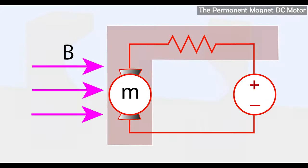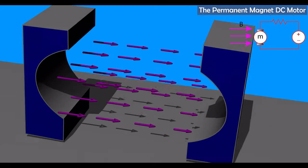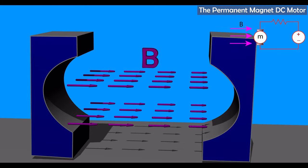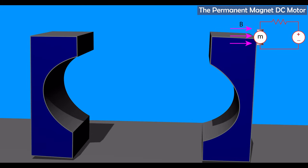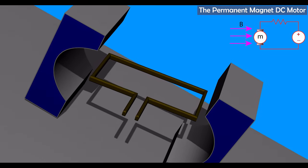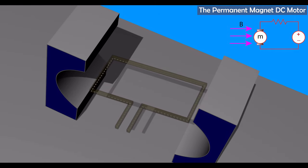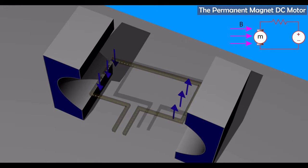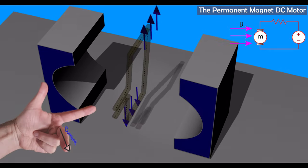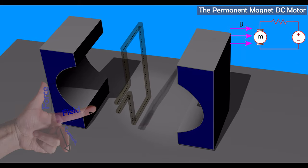Let's show a primitive design for our DC motor. We start by showing the magnetic field lines emanating from the permanent magnets. Within this region we can place our armature, shown here by a simple rectangular conductor. If we generate a DC current in the armature, due to the Lorentz force the moving charges within the conductor will start to experience a force. This force will depend on the relative directions of the field and the direction of the current.